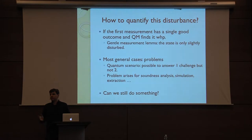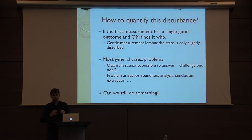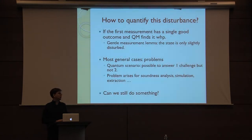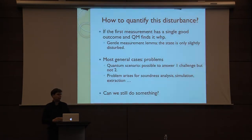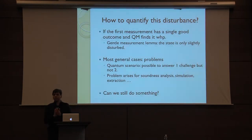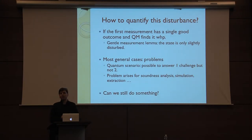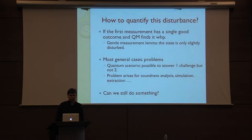So when does this thing work well? Suppose that you have only one valid good outcome. You give a challenge and you have one good answer, and you get this answer with high probability. There is something called the gentle measurement lemma, which says that you can perform this measurement only by modifying slightly the internal state rho. Somehow, if your measurement is almost certain to get one good answer, then you're not going to change much. But in many cases, that's not what's happening.